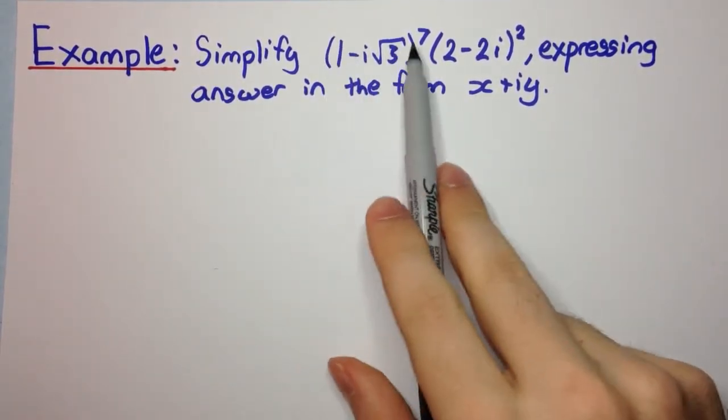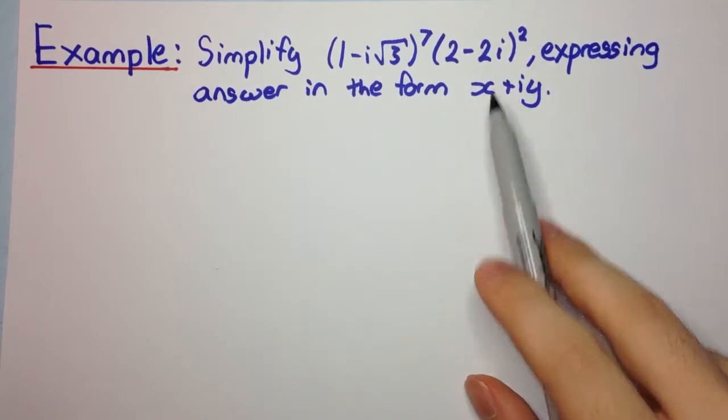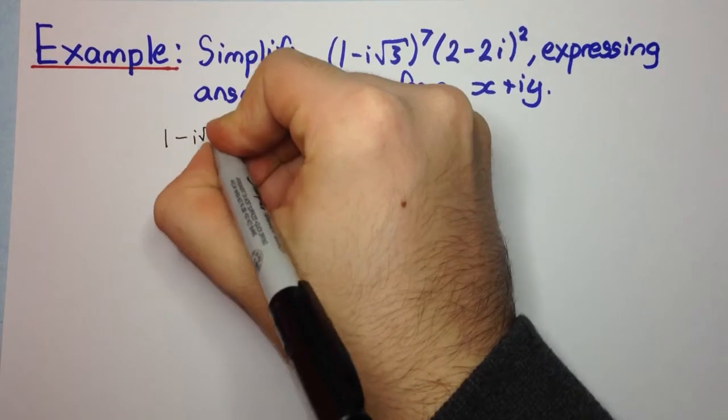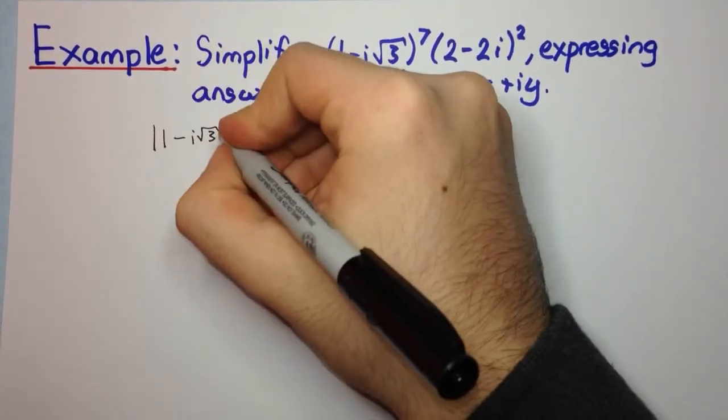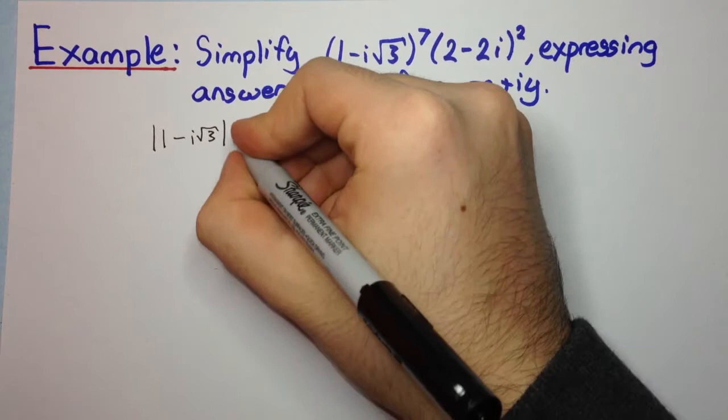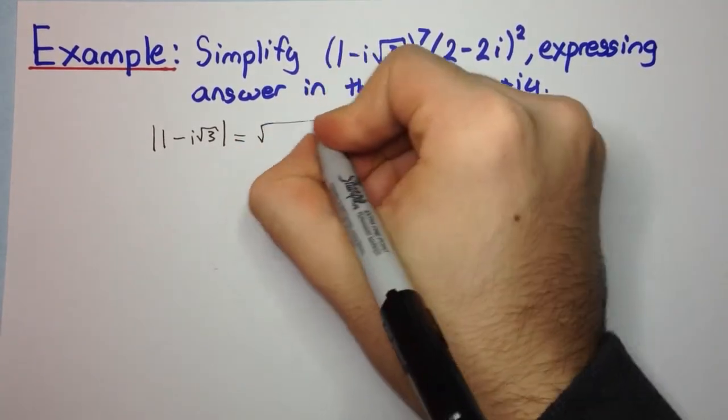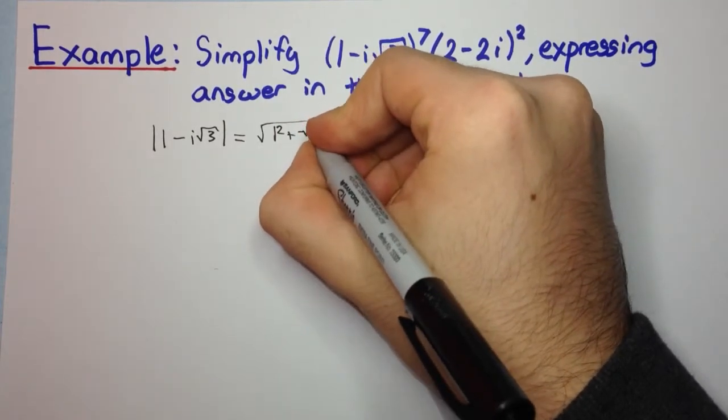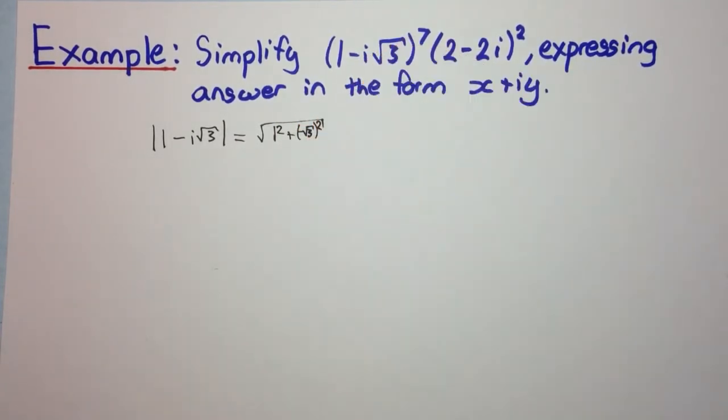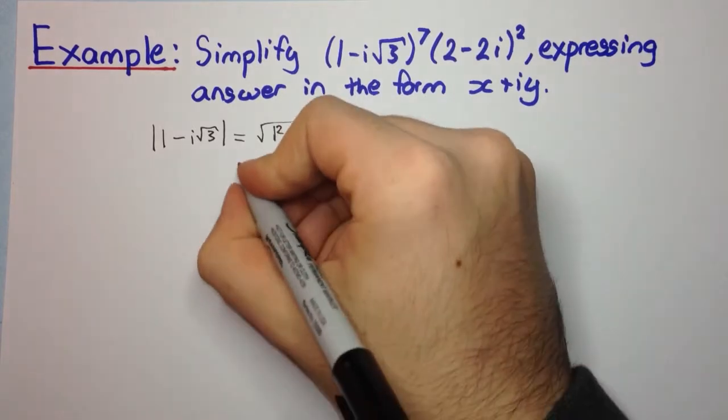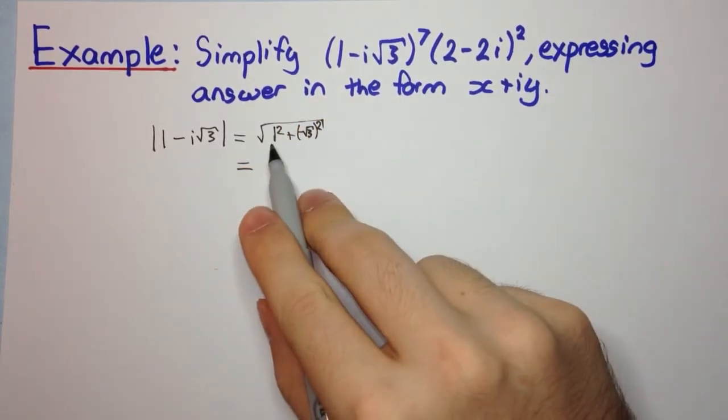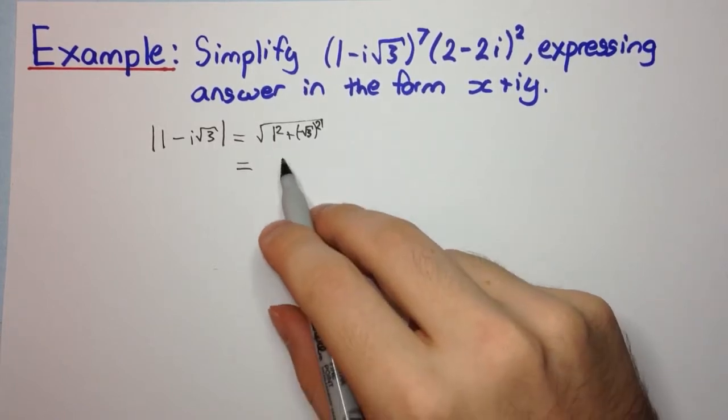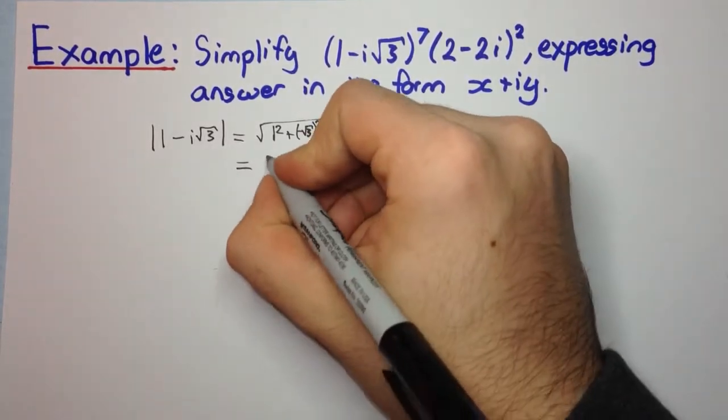So we want to solve this question using De Moivre's theorem. First of all we need to convert each of these factors to mod arg form. So let's first consider 1 - i√3. So if we want it in mod arg form, we need its modulus. So that's going to be the square root of 1 squared plus negative √3 all squared. So 1 squared is 1, negative √3 squared is 3, so we're going to have 1 plus 3 which is 4, and the square root of 4 is 2.